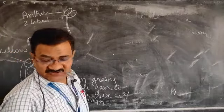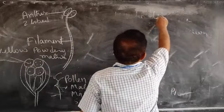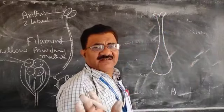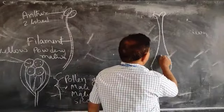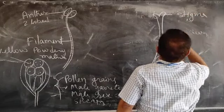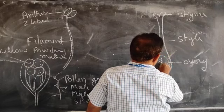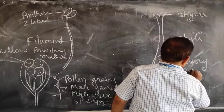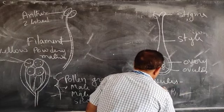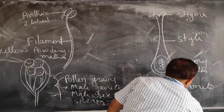Coming to the gynoecium — it is the female part of the flower, and one unit is called carpel or pistil. It looks like this: this is the stigma, this is the style, and this is the ovary. The ovary contains ovules. Ovules are the female gamete, or female sex cell.